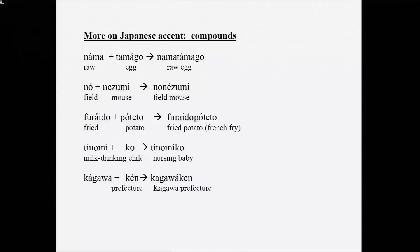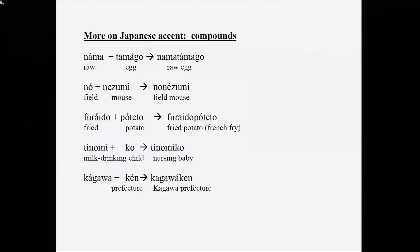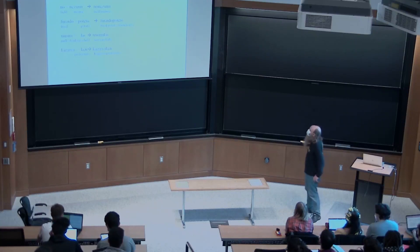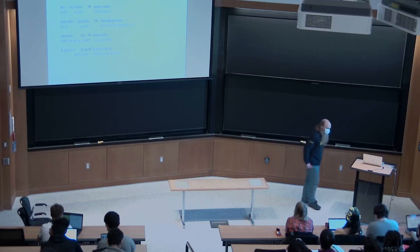What we were talking about at the end was the position of accent in Japanese compounds. Here are a bunch of compound nouns in Japanese. The observation was that when you have a compound consisting of two parts, the result always has one accent on one particular syllable. The accented syllable doesn't have to be the accented syllable in either of the original parts.